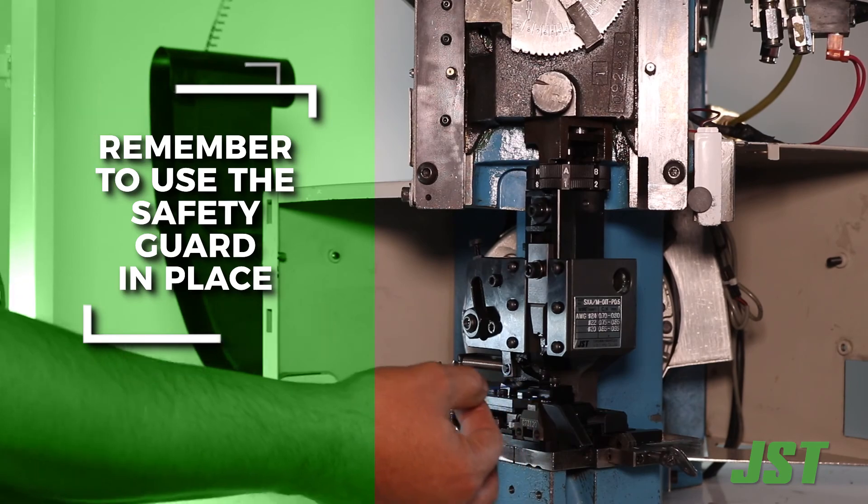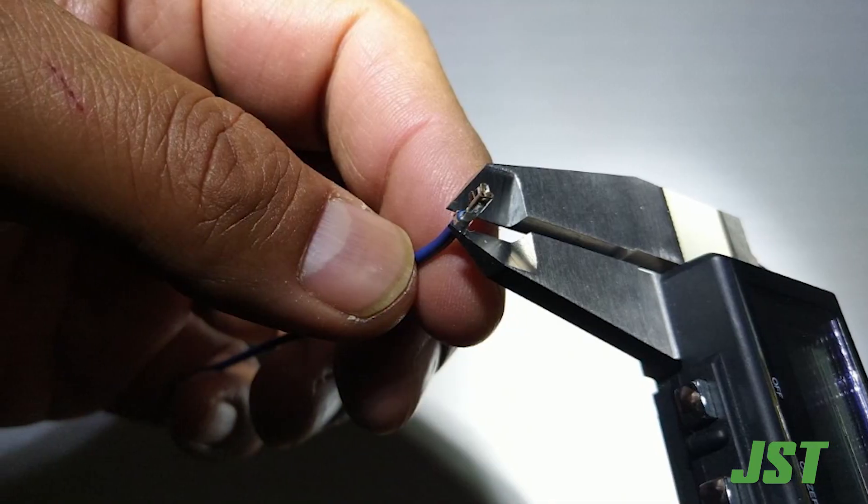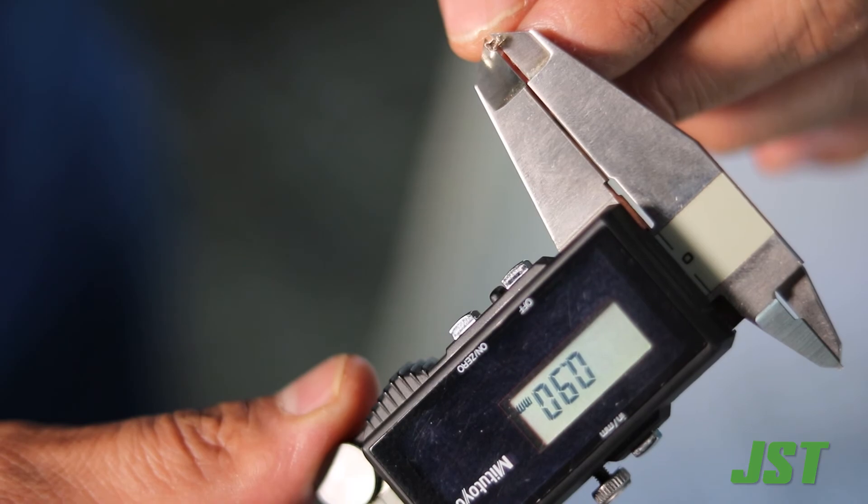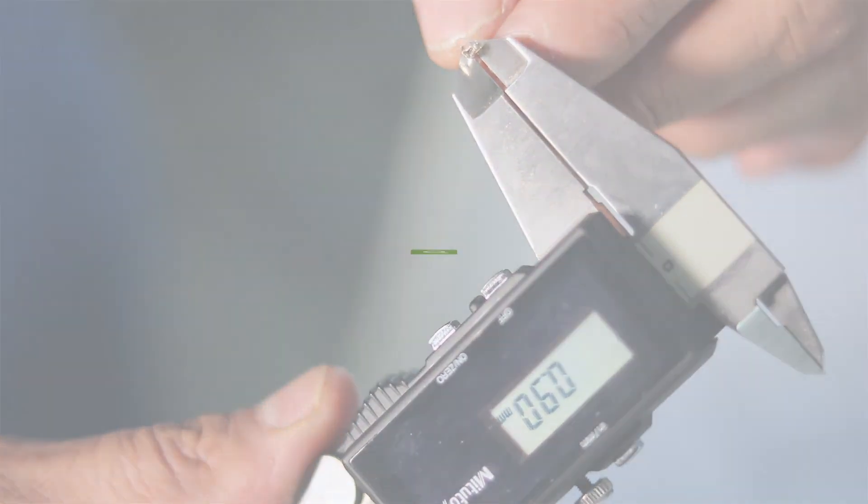Then follow the same process with the numbers until the desired insulation crimp height is achieved. For more information, contact JST at JST.com.